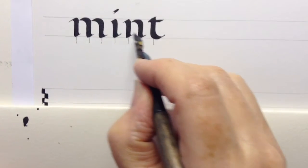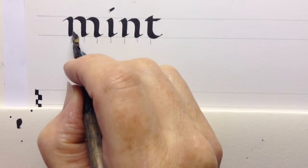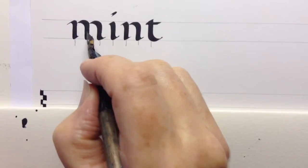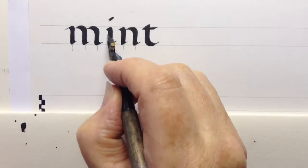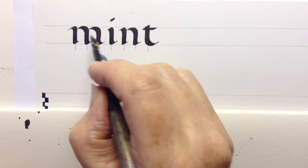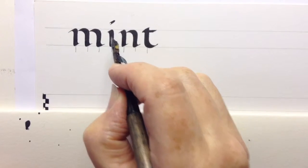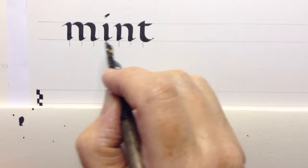Start with words that have straight sides, like this letter mint here. What you're aiming for is that the space between each individual stroke looks about the same as the space between the letters. So between there and there looks about the same as there and there, and so on.